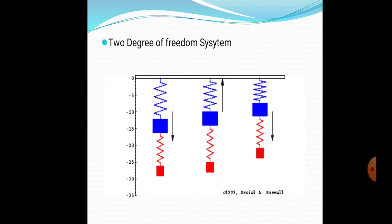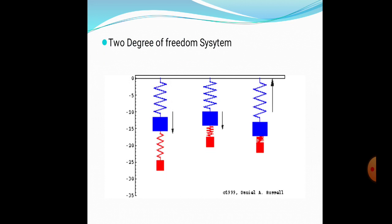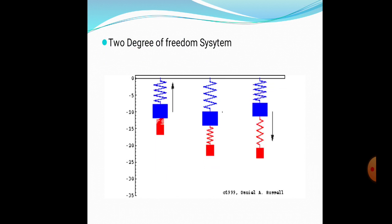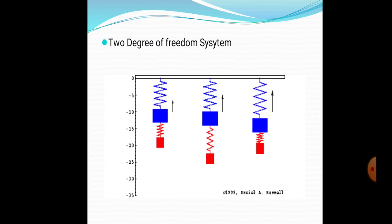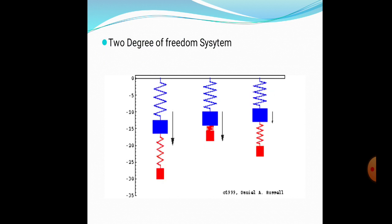This mechanism shows that the two degree of freedom system has two springs and two masses with different amplitudes. The mass M1 is shown in blue line and mass M2 in red, which have different magnitudes of spring and mass, deflecting in different ways.